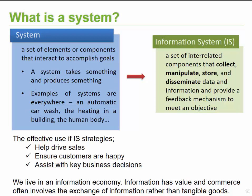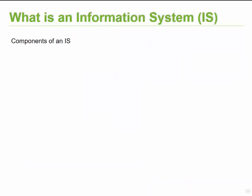So why are information systems and strategies important for companies? These systems enable us to make more money and drive sales. They can ensure customers are happier — if a customer calls a company and that information is available, you can quickly assist them. Information systems also assist with key business decisions needed to run the company effectively. To conclude: we live in an information economy. Information is around us, used in various contexts, it has value, and it allows us to conduct commerce and exchange information with other individuals and companies.